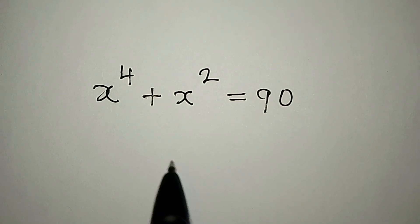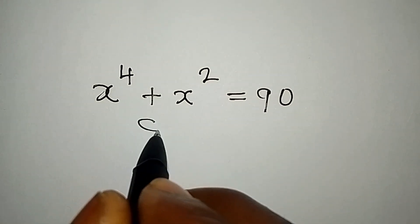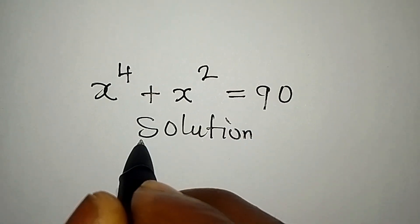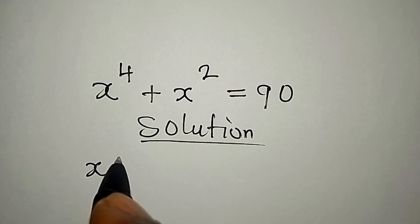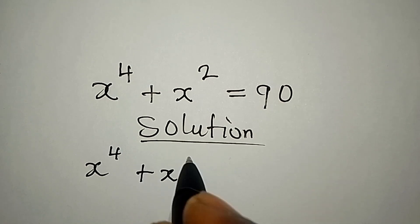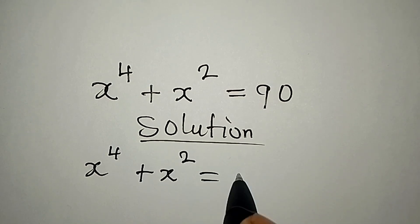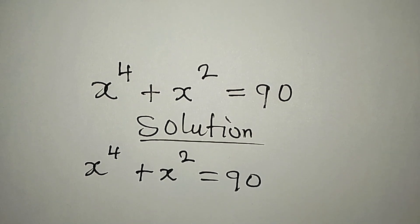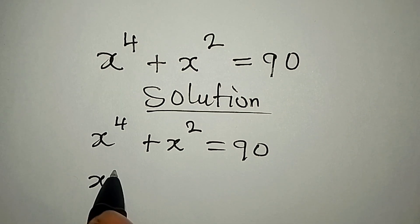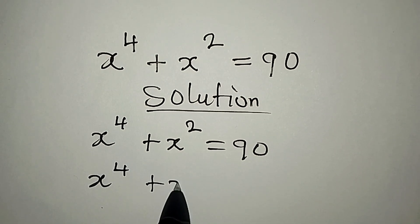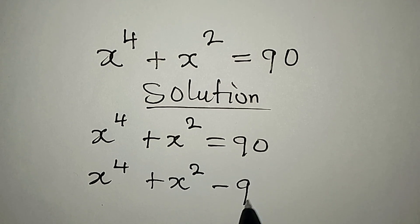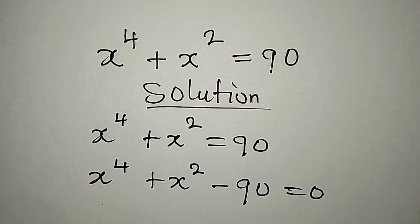Hello everyone, let's provide the solution to this problem: x to the power of 4 plus x to the power of 2 equals 90. So what do I do? x to the power of 4 plus x to the power of 2 minus 90 equals 0.